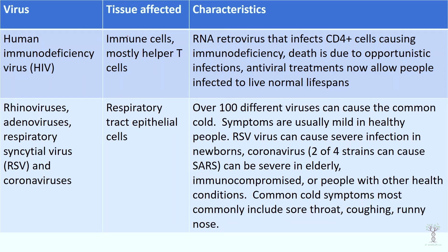To summarize with a chart: HIV infects immune cells, primarily helper T cells — cells that have the CD4 receptor. HIV is an RNA virus and is considered a retrovirus because its RNA is converted into DNA. Opportunistic infections are the main problem once the person becomes immunodeficient. In the 1980s people died from HIV because there were no treatments. Now there are antiviral treatments and many people have effective treatment to live normal lifespans.